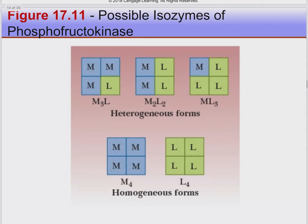Phosphofructokinase has different isoforms — it's a tetramer with variation in its chains. There are two peptides: one called M, prevalent in muscle, and one called L, prevalent in the liver. These differ in minor amino acid differences making them susceptible to different levels of regulation. You may want to stop glucose metabolism in the liver faster than in the muscles, for example. So they're going to be susceptible to different levels of ATP and intermediate sugar product allosteric inhibition.